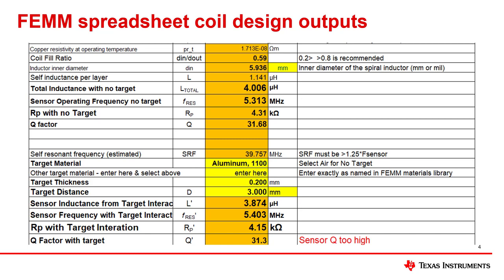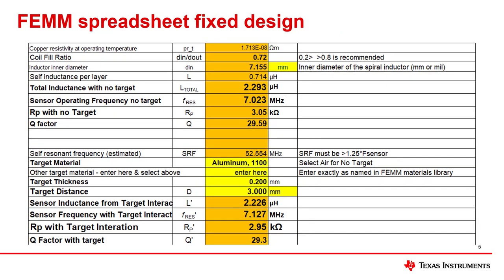I can increase my capacitor, but that will drop my sensor frequency, and I'm already close to the lower end that is supported by this device. Instead, I chose to decrease the number of turns per layer down to seven for my coil design. Now with this change in number of turns, the Q factor is within range, and there are no changes needed for this design. Also note that the coil fill ratio is now close to the upper end of the recommended region.